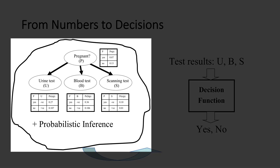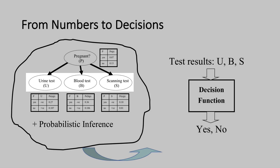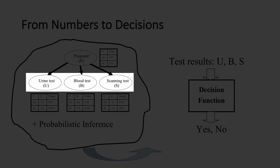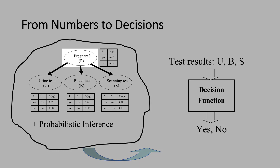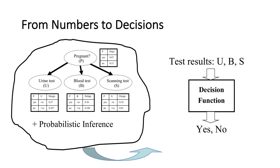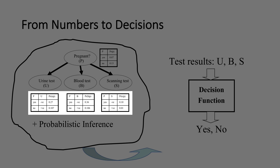The next slide has perhaps the major insight behind our approach for explanation. This is an example of a machine learning system — specifically a classifier known as a naive Bayesian network — meant to classify patients as pregnant or not. You have three tests: a urine test, a blood test, and a scanning test. You get the results and compute the probability of pregnancy, and if this probability crosses a certain threshold, say 90%, you classify the patient as pregnant.